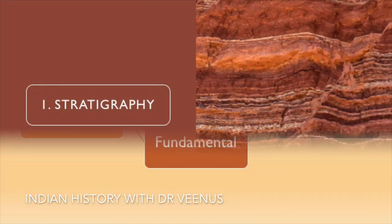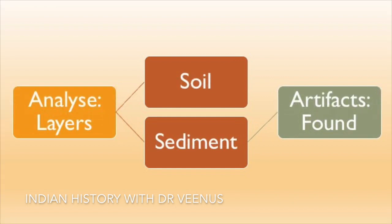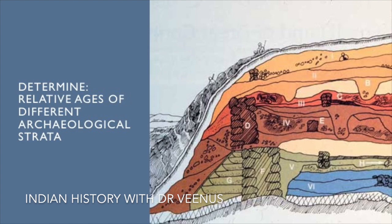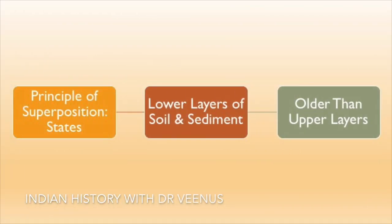Stratigraphy is the most basic and fundamental relative dating method. It involves analyzing the layers of soil and sediment in which artifacts are found to determine the relative ages of different archaeological strata. Stratigraphy is based on the principle of superposition, which states that the lower layers of soil and sediment are older than the upper layers.